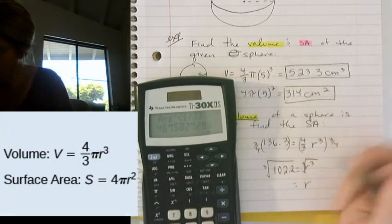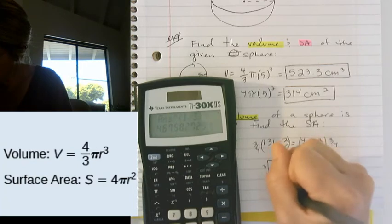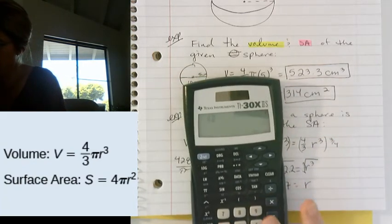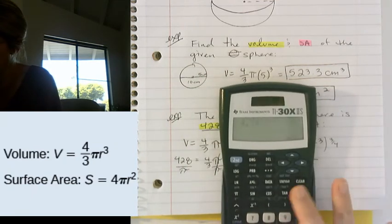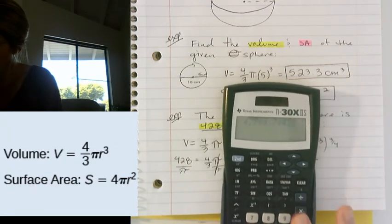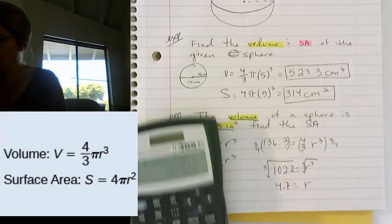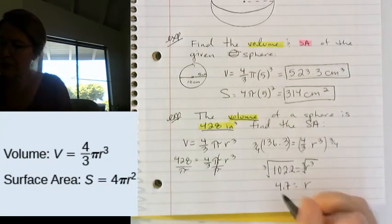So it says 4.67, I'm just going to round it to 4.7. And let's just check that, 4.7 times 4.7 times 4.7. Yep, that's about 103. Really close. Alright, so that's our radius. Are we done? We are not done.